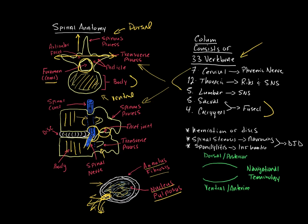Disc herniation is a very common problem and sometimes occurs spontaneously as people get older and things degenerate. It causes two major problems: first, spinal stenosis — a narrowing of the spinal canal — where herniated material decreases the size of the canal and begins to put pressure on the spinal nerves and roots as they come out. Second, spondylitis, which is inflammation within the canal. Together, these two things form the basis of degenerative disc disease, or DDD.